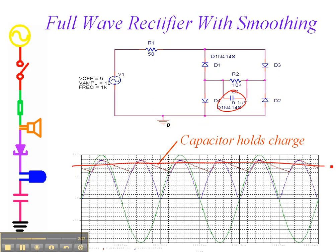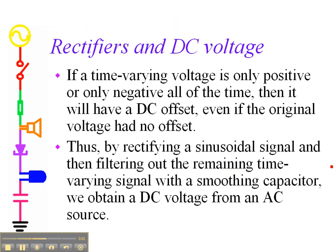If we use enough filtering — a big enough capacitor — this smooths out quite nicely. So if a time-varying voltage is only positive or only negative all the time, it will have a DC offset even if the original voltage has no offset. If we rectify a sinusoidal signal and then filter out the remaining time-varying signal, we'll be able to obtain a DC voltage from an AC source. Most of the circuits we deal with require DC values — chips require 9 volts or 15 volts DC — but power from the wall comes out as 110 volts AC, so we have to turn it into a constant DC voltage.